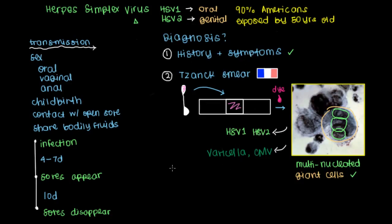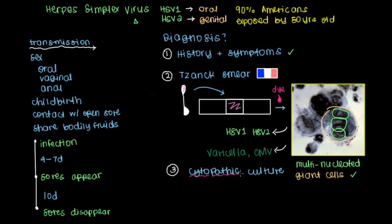But even beyond that, another test that used to be done is what's referred to as a cytopathic culture. The reason why it's called cytopathic is that what we try to do in this test is to take cells and kill them — that's why it's a cytopathic culture. You might recognize 'pathic' from the term pathology, which is the study of disease. So we take cells and we give them a disease.